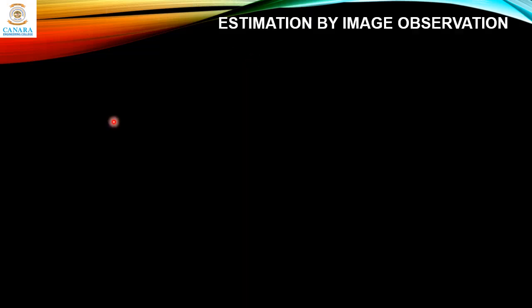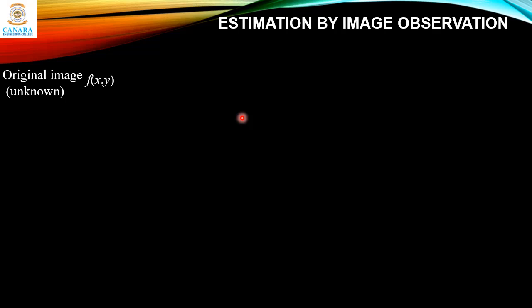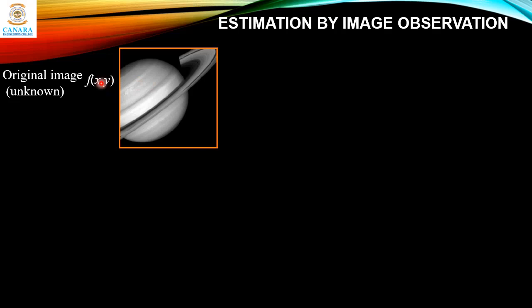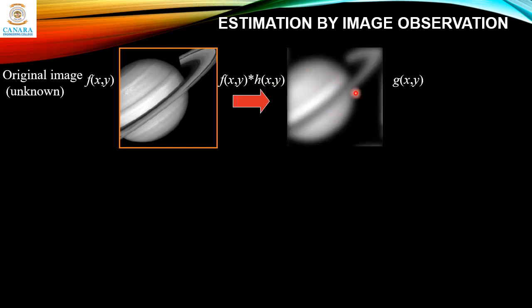The first type is estimation by image observation. Suppose we are given a degraded image without any knowledge about the degradation function h. One way to estimate this function is to gather information from the image itself. For example, if the image is blurred, we can look at a small section containing simple structures like part of an object and its background, to reduce the effect of noise. Using simple gray levels of the object and background, we can construct an unblurred image of the same size and characteristics as the observed image.